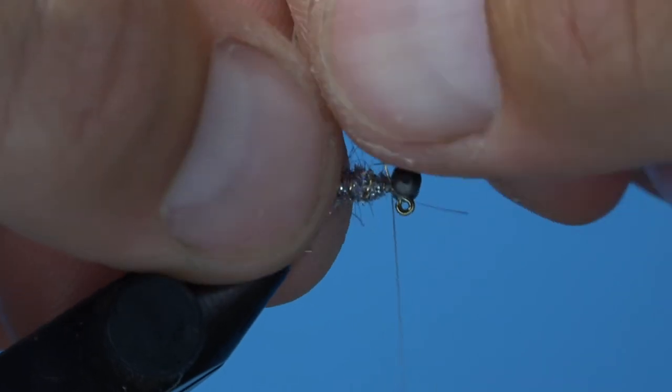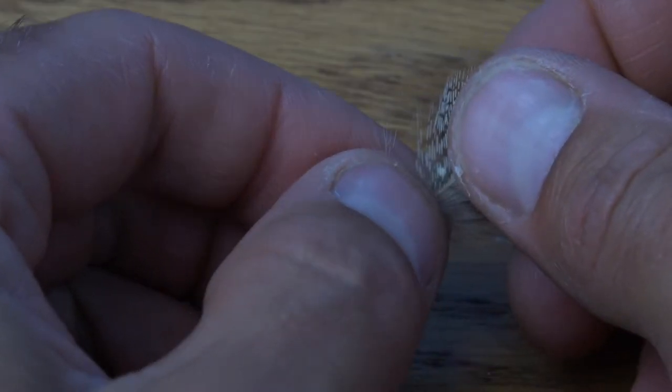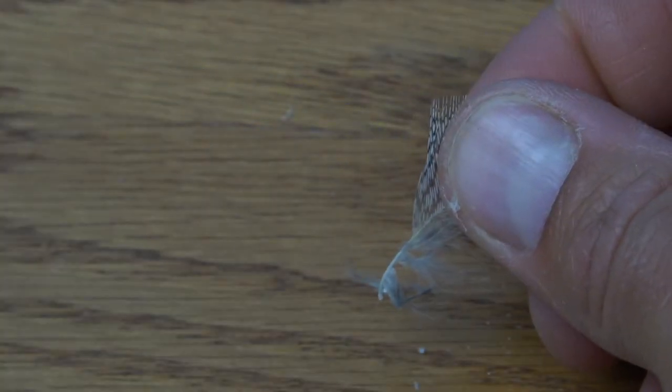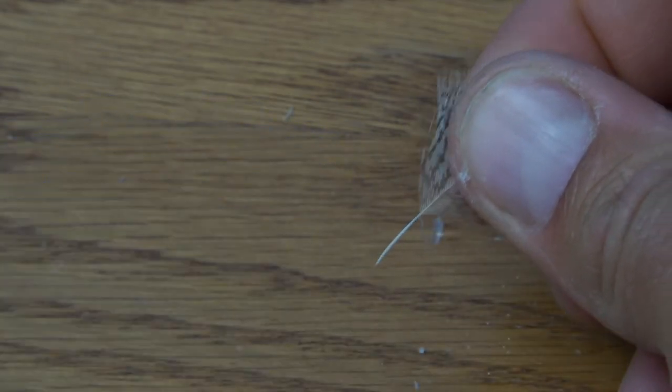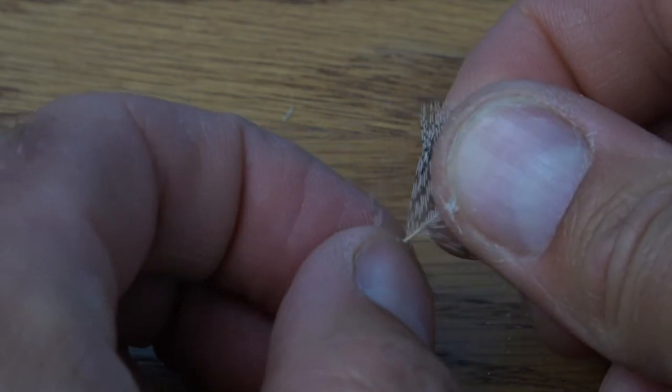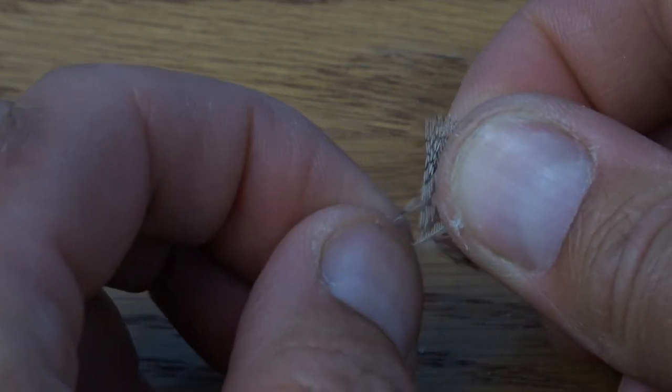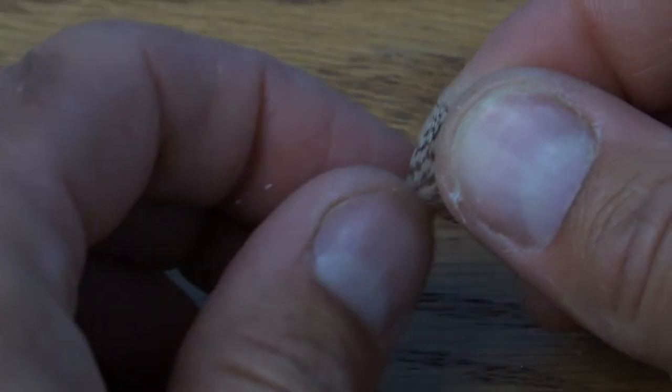Now it's time to go back to our partridge pelt for one more beautiful feather. Prepare this feather in the traditional soft tackle style. While holding the tip, remove all the butt end fluffy stuff and begin preening the remaining feather fibers rearward to splay them out.